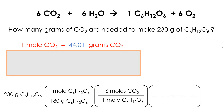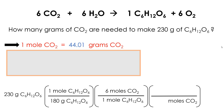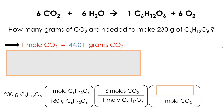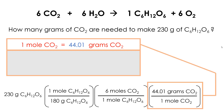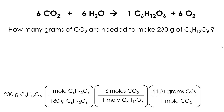I have one more step — I write another conversion fraction. The unit on the bottom is going to be the same as the unit and chemical on the top of the previous fraction: moles of carbon dioxide. I look through my facts and the first one helps — one mole of carbon dioxide relates. It has the same unit and chemical, so that half goes on the bottom: one mole of carbon dioxide. The other half goes on the top: 44.01 grams of carbon dioxide. So this equality relationship turned into this fraction.